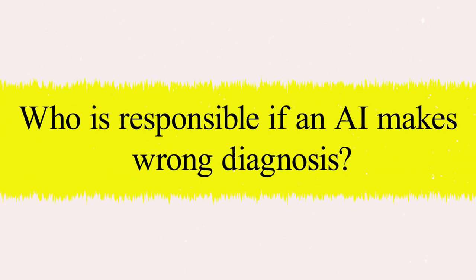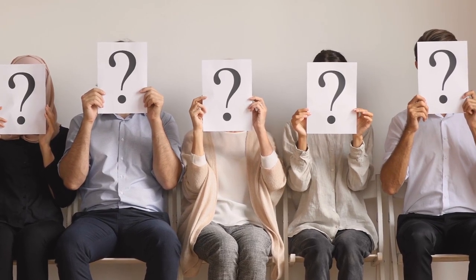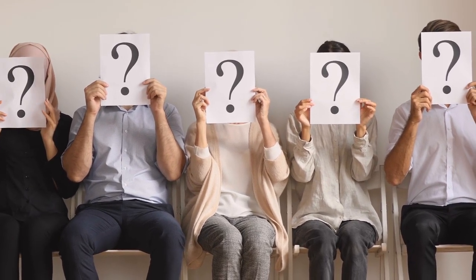Lastly, we must address the ethical dilemma of AI decision-making. Who's responsible if an AI makes a wrong diagnosis or recommendation? How do we maintain transparency in AI algorithms often described as black boxes? These questions need careful consideration and robust legal frameworks.